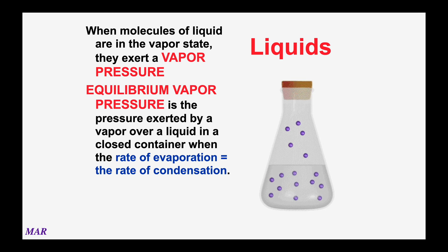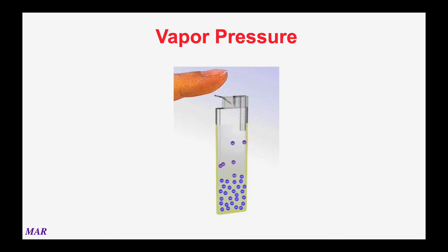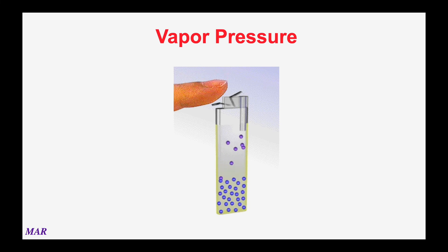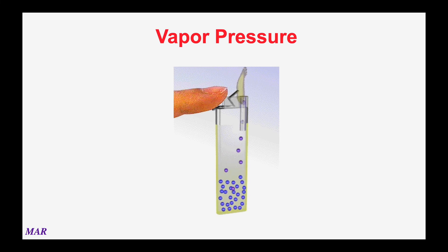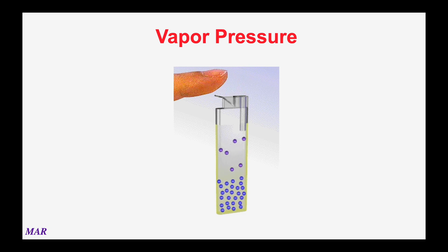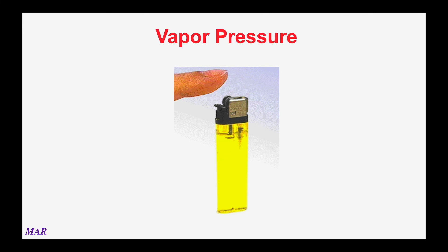The vapor pressure concept has interesting chemistry applications. The liquid in a butane lighter is in dynamic equilibrium with gaseous butane, which has a vapor pressure of about 2.4 atmospheres. When the valve is opened, butane gas escapes from the lighter, the system goes out of equilibrium, and liquid butane rapidly evaporates into the gas phase. When the valve is closed, the system quickly comes back to equilibrium with the pressure of butane vapor equal to 2.4 atmospheres. Butane is just barely a liquid at room temperature, and above the butane you have vapor pressure.